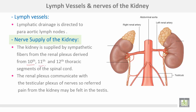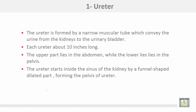The nerve supply of the kidney: the kidney is supplied by sympathetic fibers from the renal plexus, derived from the 10th, 11th, and 12th thoracic nerves. The renal plexus communicates with the testicular plexus of nerves, so referred pain from the kidney may be felt in the testis.